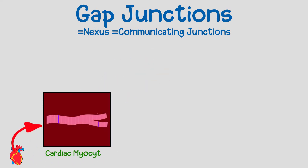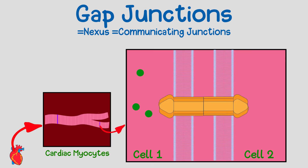The heart muscle cells, or cardiac myocytes, are the contracting cells of the heart. For the heart to function properly, these cells must contract together in unison. For the cells to contract in unison, one cell must pass the signal to the neighboring cell to make them contract. This signal comes in the form of ions, which trigger changes in the electric potential of the membrane.